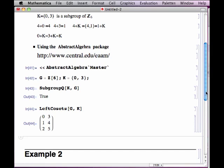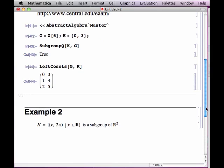Let me turn to another example that we can't use the AbstractAlgebra package for, but it does illustrate this geometric similarity I mentioned. So the second example is a subgroup of R^2, the real numbers, the direct product of the real numbers with itself.